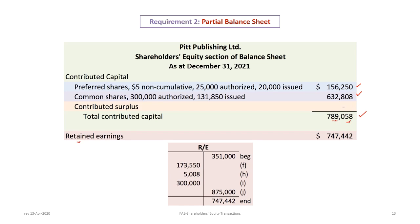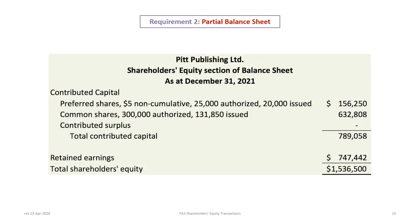The last component needed is retained earnings. Tracing through the T-account: beginning balance of $351,000, less the stock dividend, less $5,008 from the share repurchase and cancellation, less $300,000 in dividends paid, plus $875,000 in net income — giving an ending balance of $747,442. The total shareholders' equity on the partial balance sheet is $1,536,500, comprised of $789,058 in contributed capital and $747,442 in retained earnings.